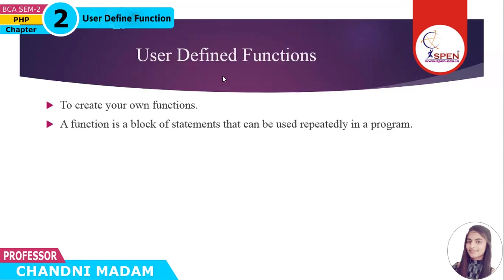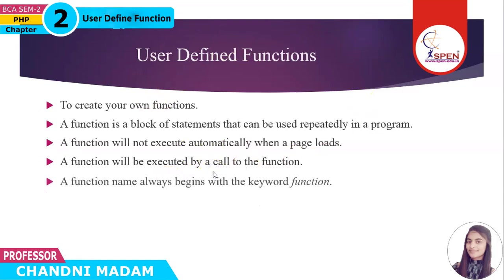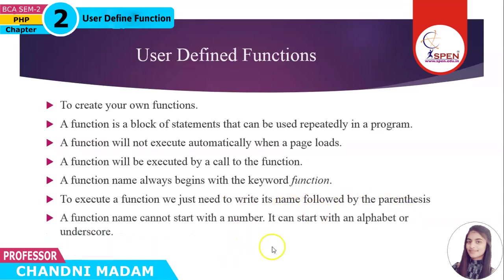A block of code that is used repeatedly in your program is turned into a function. A function is not executed automatically when the page loads — you need to call that function. The function keyword is used at the beginning of your function name. Whenever we want to call a function we use the function name followed by parentheses. Also, a function name cannot start with a number — it must always start with an alphabet or an underscore.